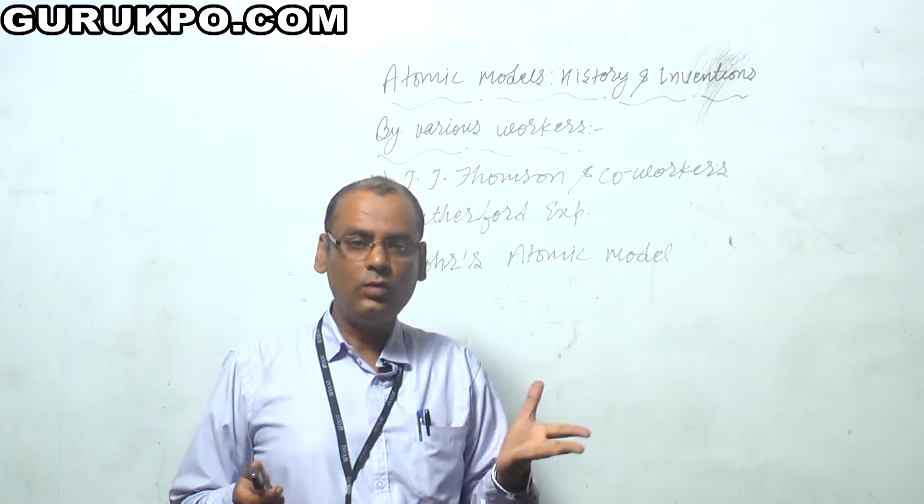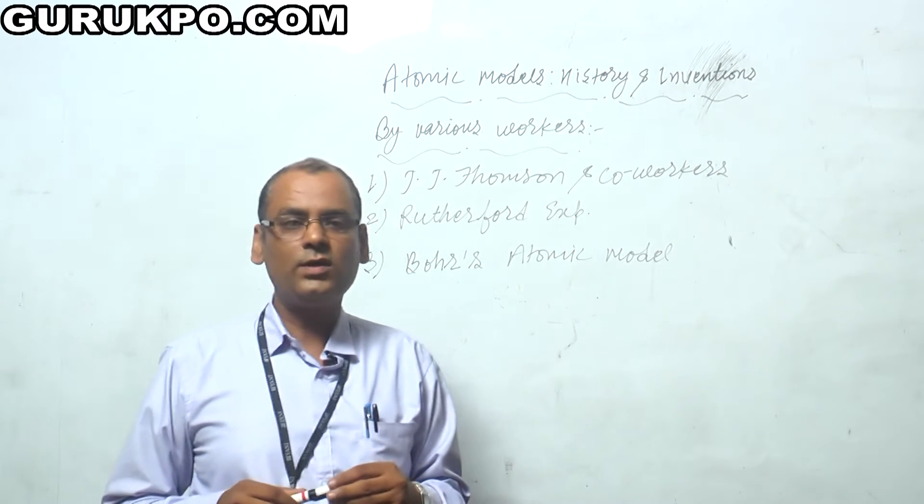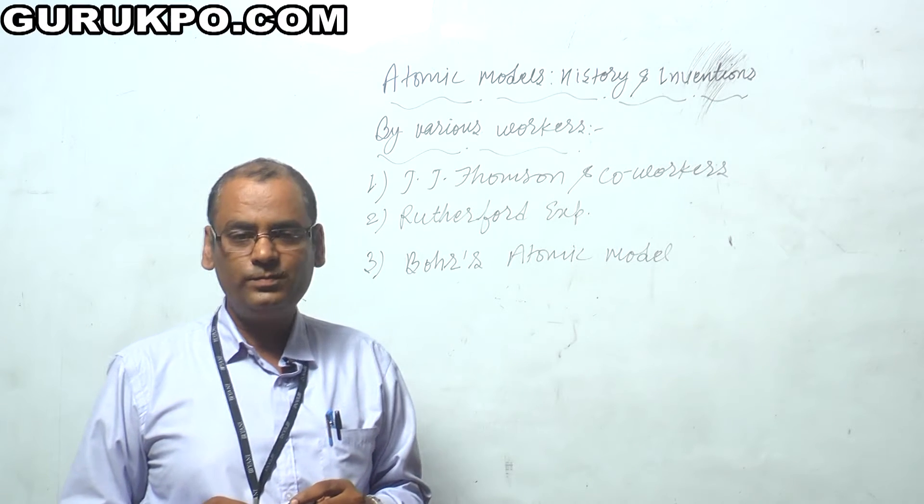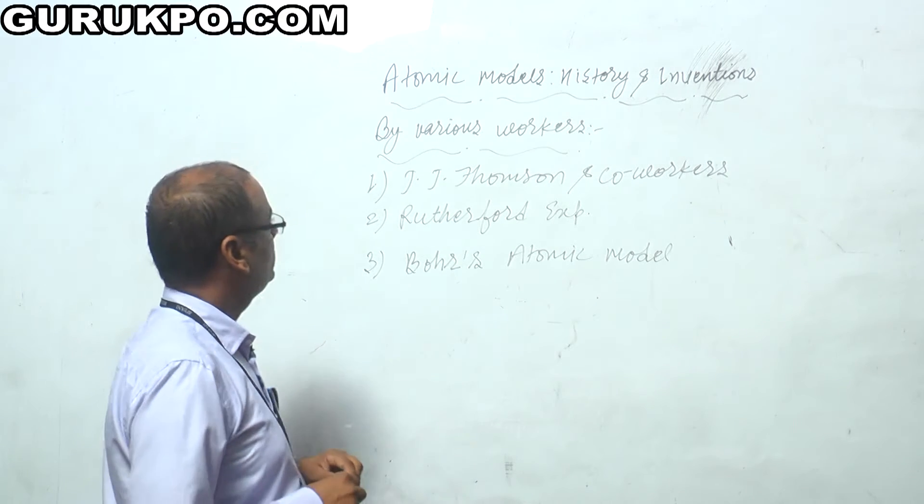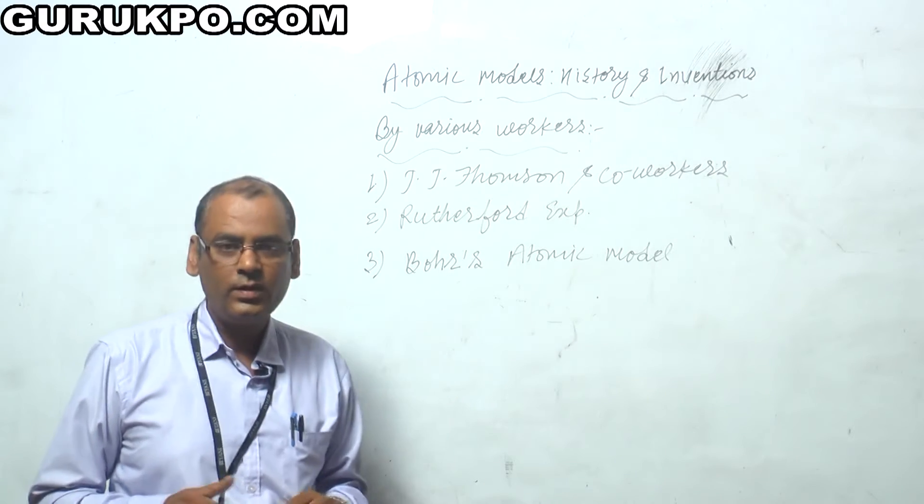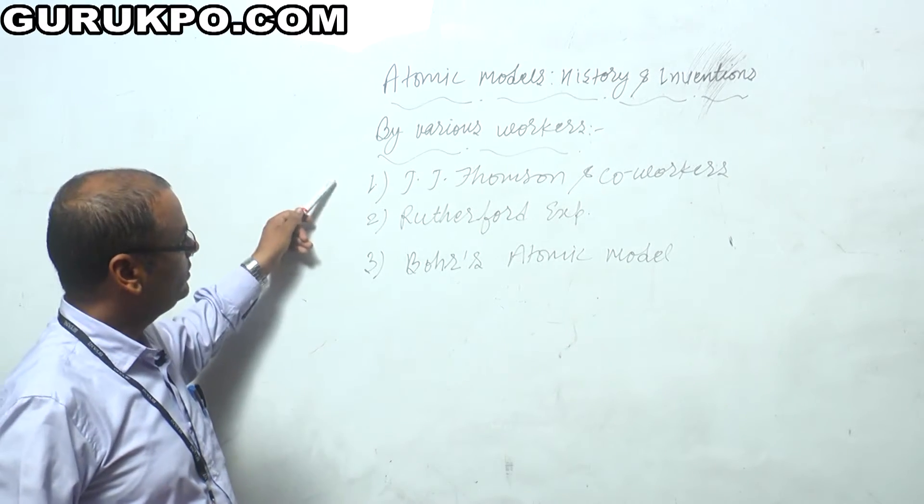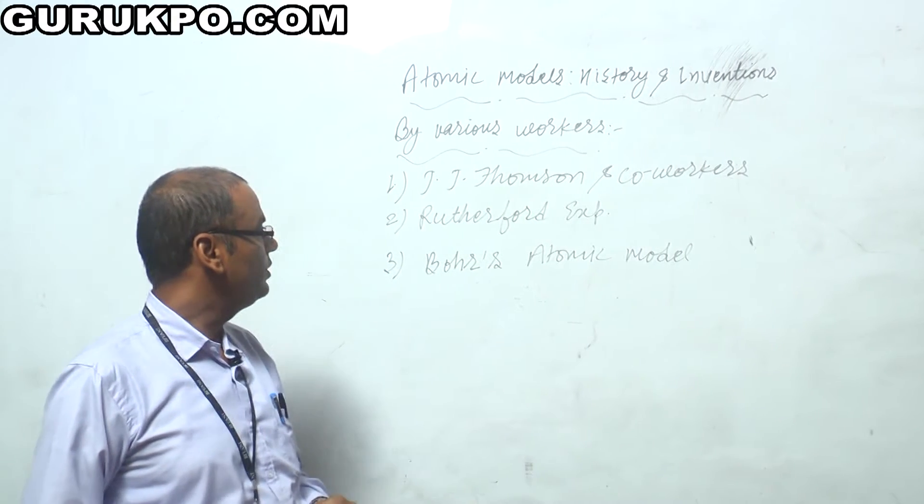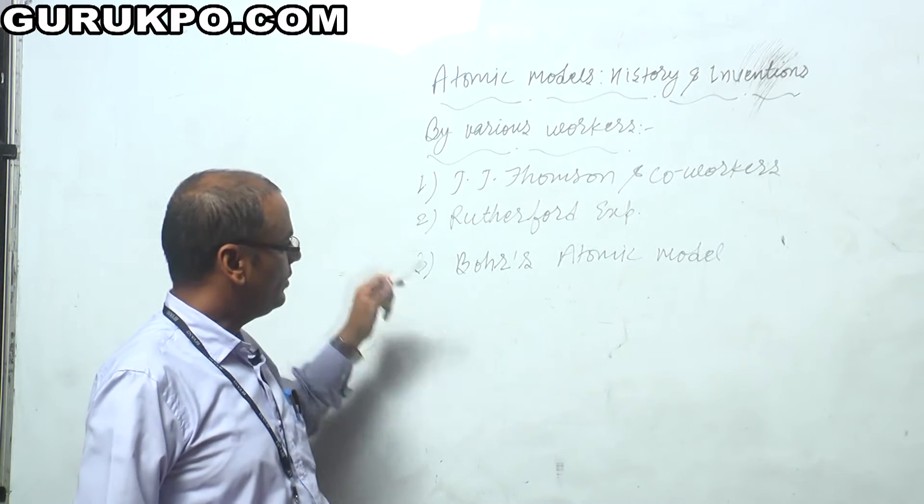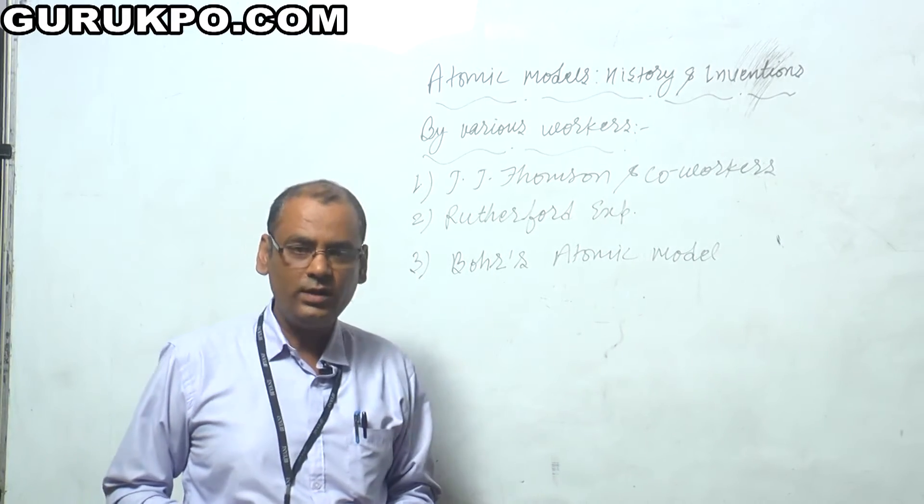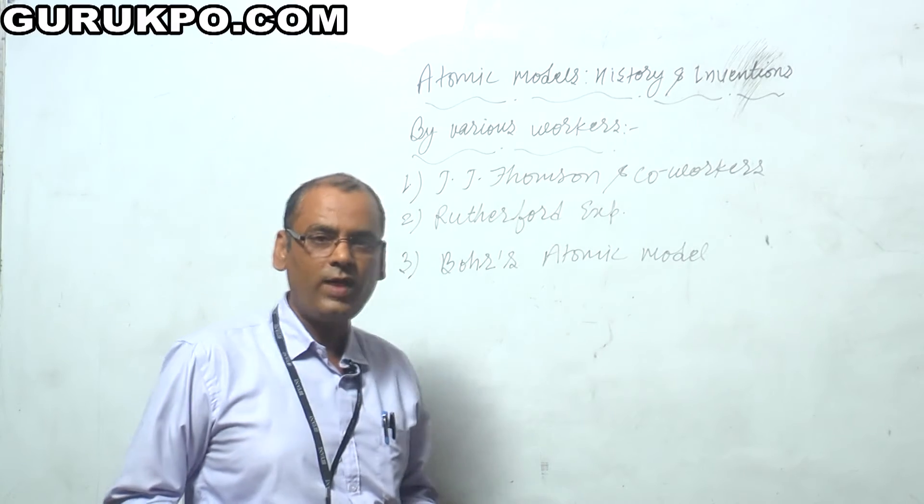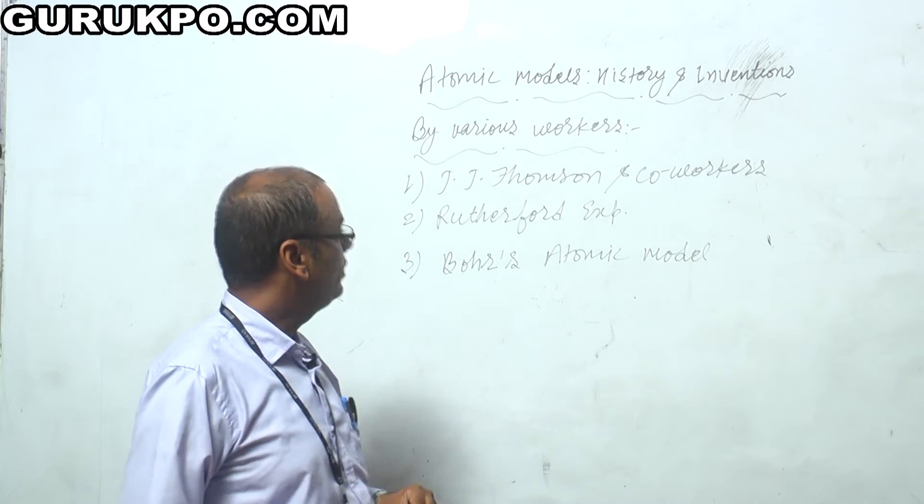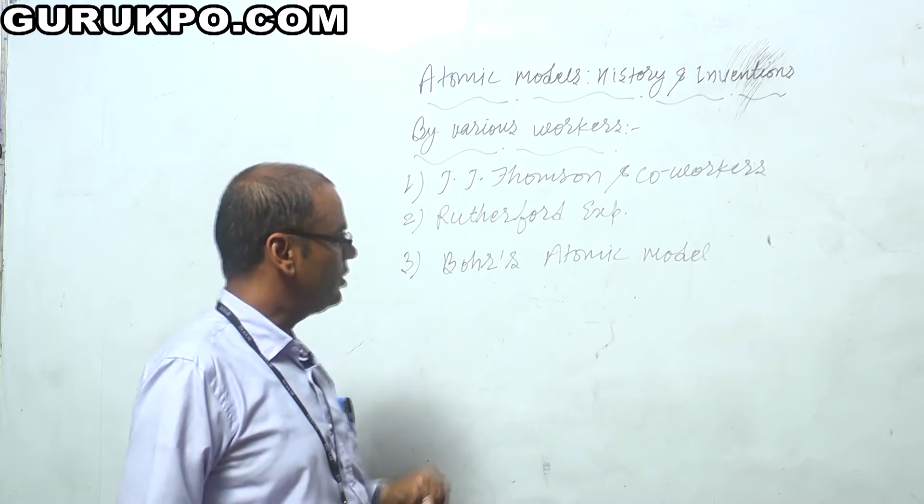There were no methods to discover the various types of subatomic particles present in the atom. Afterwards, a number of workers have done their work and the pioneers were JJ Thompson and co-workers. Afterwards, Rutherford gave their experiment and then Bohr refined the atomic model.